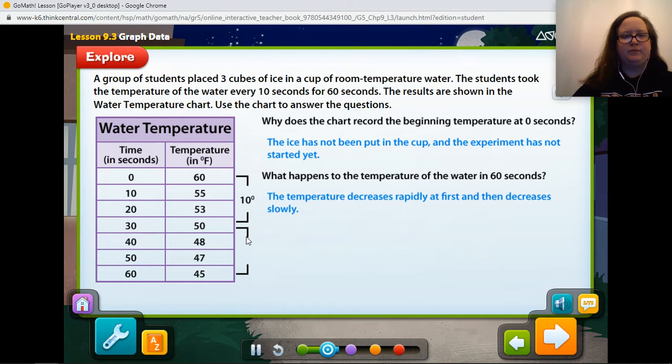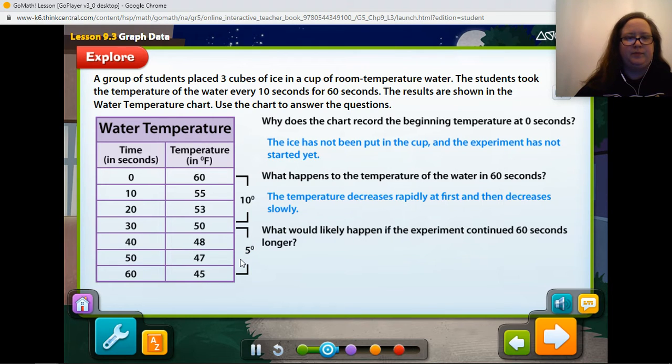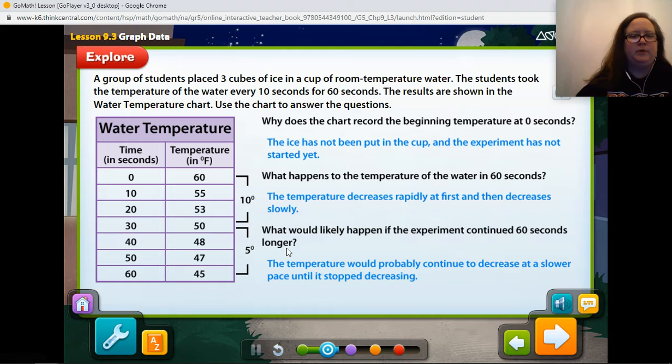How much does the temperature decrease in the last 30 seconds? It goes from 50 to 45, so 50 minus 45. The temperature decreases from 50 degrees to 45 degrees or 5 degrees in the last 30 seconds. Analyze these observations of the temperature of the water during the 60 seconds. What would likely happen if the experiment continued 60 seconds longer? What do you think? Because the temperature decreases quickly at first and then slows, we would expect the temperature to continue to decrease more and more slowly until it did not decrease any longer.